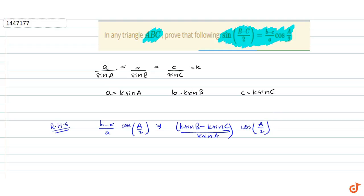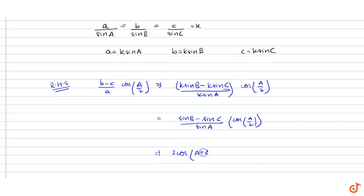we get (sin B - sin C) / (sin A) into cos(a/2). Now sin B - sin C becomes 2·cos((B+C)/2)·sin((B-C)/2), so the expression becomes 2·cos((B+C)/2)·sin((B-C)/2) upon sin A into cos(a/2).